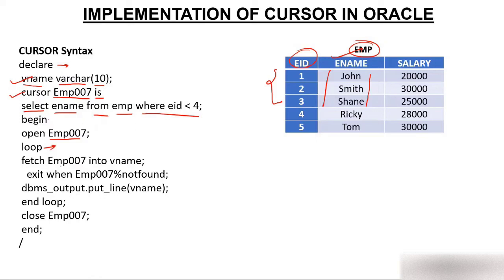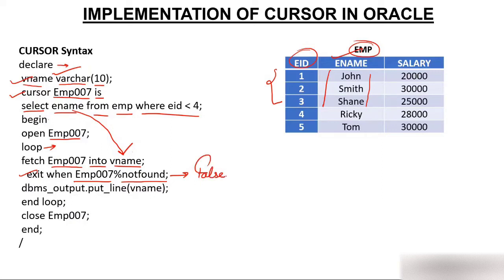We fetch imp007 into vname. Vname is the variable we created, so this fetches ename from imp whose id is less than 4 into vname. Then we have EXIT WHEN — exit when imp007 is not found, meaning when you are trying to fetch values and you are not getting a value. The moment that becomes true, you exit. In the current situation, John's employee id is less than 4, so this becomes false because we have a value, and the first value we get is John, which we print using dbms_output.put_line(vname).